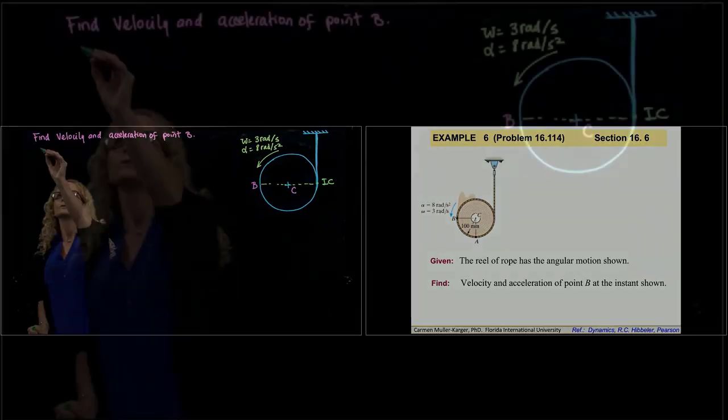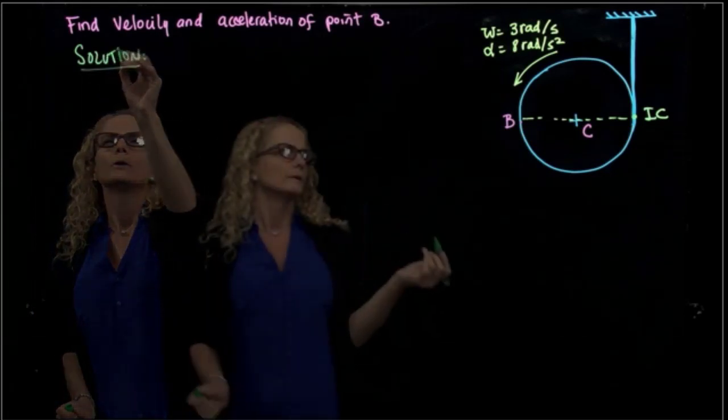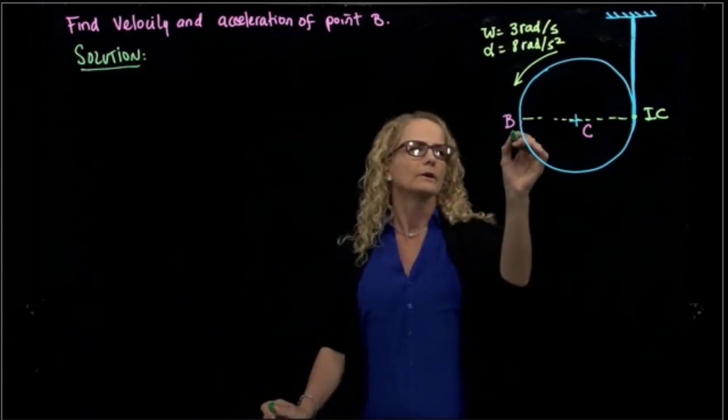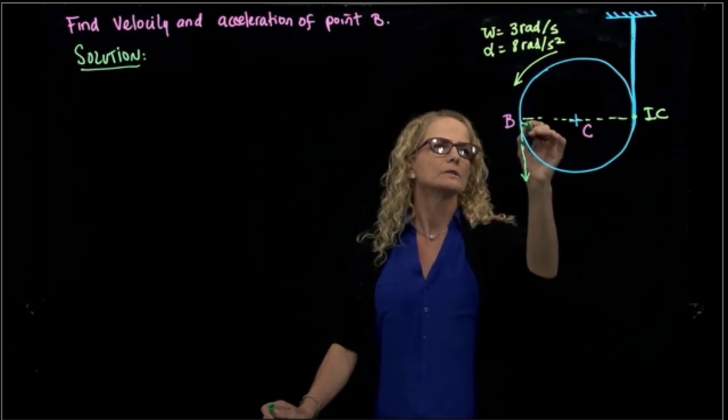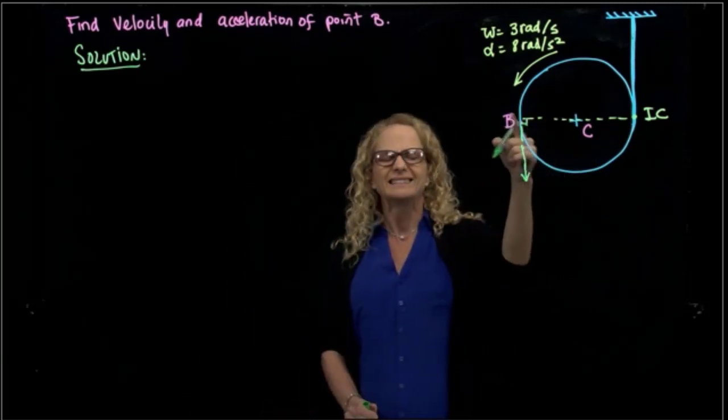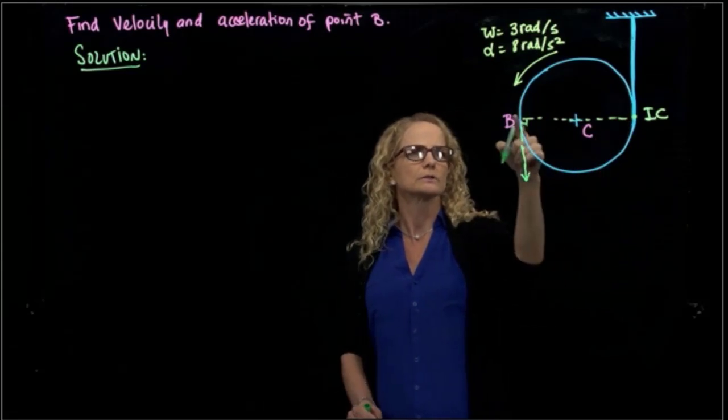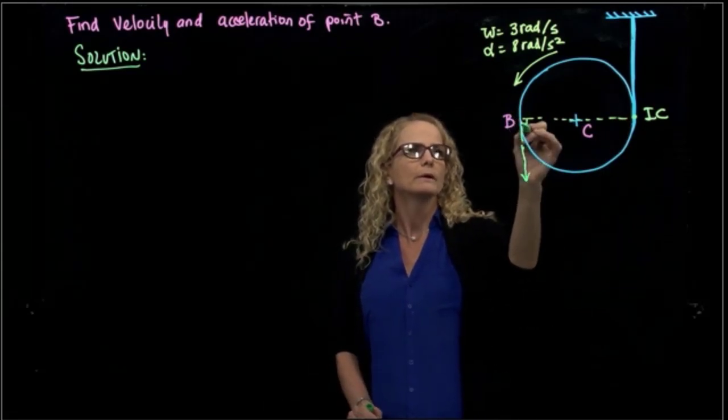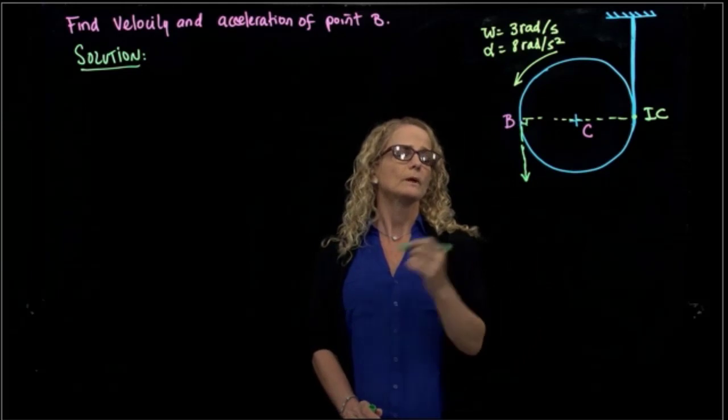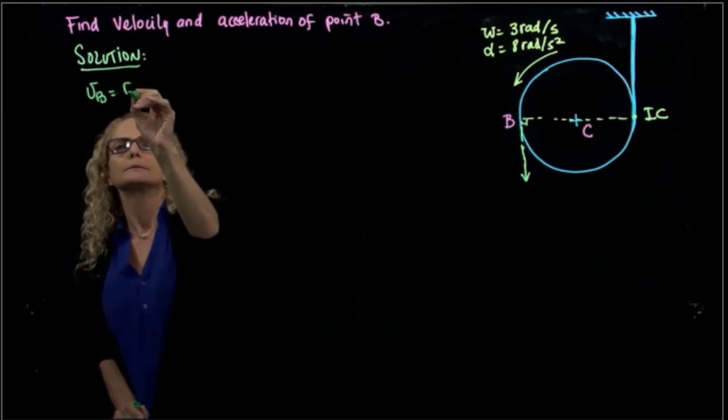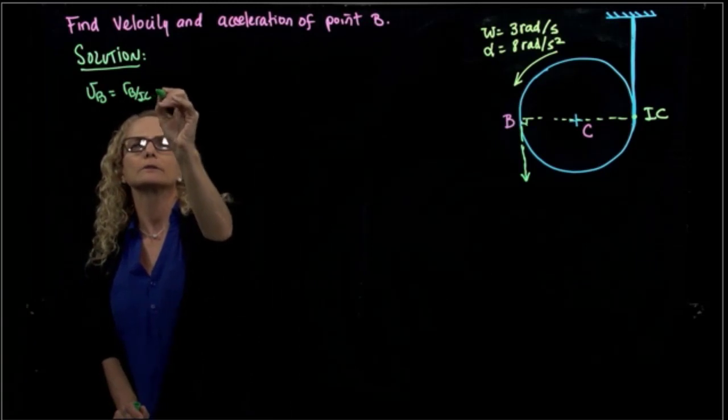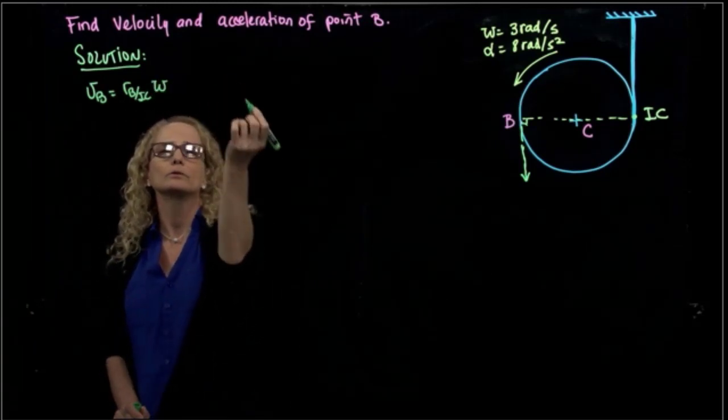So the solution: the velocity is very easy. We have a velocity that is always perpendicular with the distance of the instantaneous center of rotation to the point. And it will be equal to the distance between B and the instantaneous center of rotation times omega.